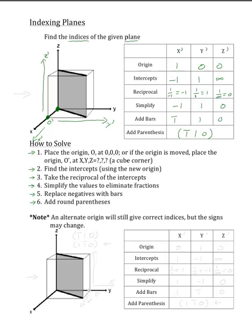I also wanted to point out that if we choose a different origin, it may cause the signs of the numbers in the indices to switch, meaning that our bar 1, 1, 0 answer from the previous part may become 1, bar 1, 0.